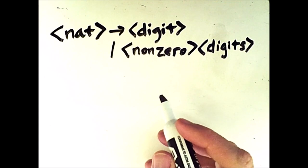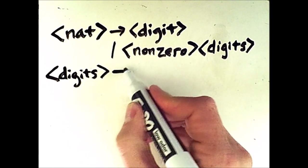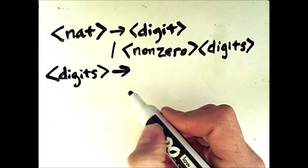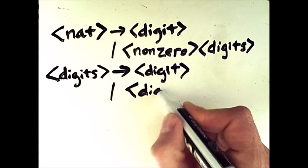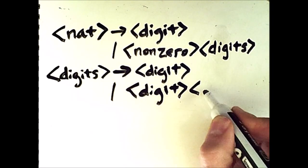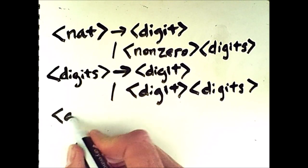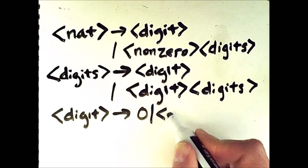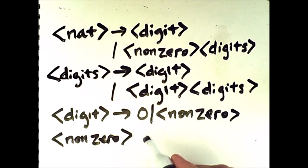So what are digits? We have a new non-terminal called digits with an S, and this is going to be the recursive non-terminal. So digits is either a digit or a single digit followed by digits. And so now we need to define digit and non-zero. Well, a digit is either the terminal 0 or a non-zero. And non-zero will be the collection of all the terminal digits from 1 to 9.